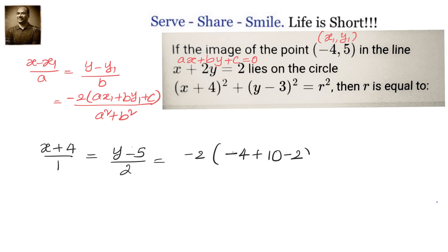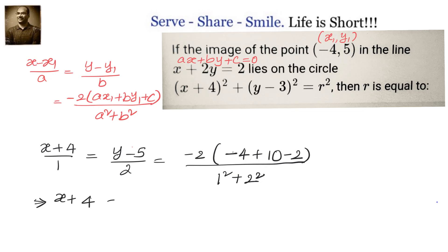Let us substitute the values. Here x1, y1 is minus 4 comma 5; a equals to 1, b equals to 2, and c equals to minus 2. Substituting, we get x plus 4 divided by 1 equals to y minus 5 by 2 equals to minus 2 into 4 divided by 5.